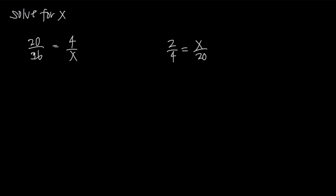When you're dealing with proportions like these, there are a couple of things you want to remember. First, you want to see if you can reduce either fraction. We obviously can't reduce 4 over x, but we can reduce 20 over 36 — we can divide both by 4. So if we divide 20 by 4, we get 5; if we divide 36 by 4, we get 9. So we get 5 over 9 equals 4 over x. We haven't changed this fraction at all, we just divided the numerator and denominator by 4, so we reduced it to 5 over 9 equals 4 over x.